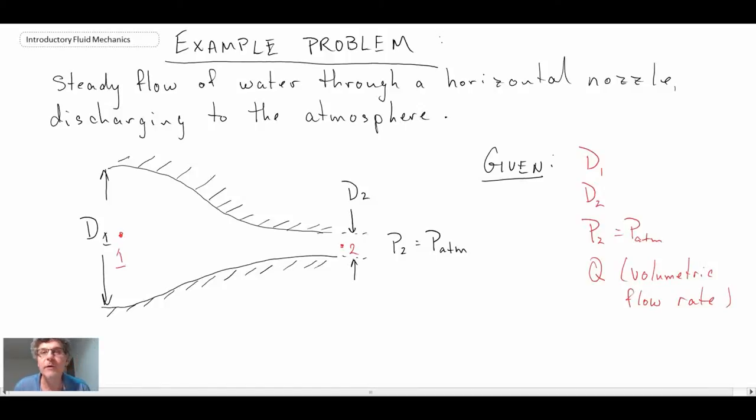Given that we're going to apply Bernoulli's equation, we're going to apply this along a streamline going right down the centerline of the nozzle. If we were to do flow visualization, we'd probably have other streamlines, and we could apply Bernoulli to those as well, provided they're not too close to the wall. But we'll only be looking at the one going right down the middle.